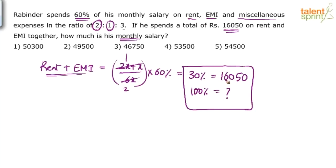16,050 divided by 30% - so 10% comes out to be 5,350. Therefore, 100% will be 5,350 times 10, which is 53,500. That's your answer.